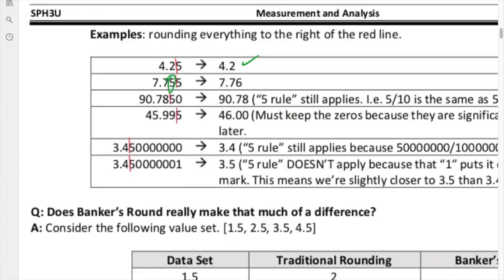Let's take a look at this one - 7.755. We're either going to round this up to a 6 or leave it as a 5. We're going to round it up to a 6 because the 6 is an even number.